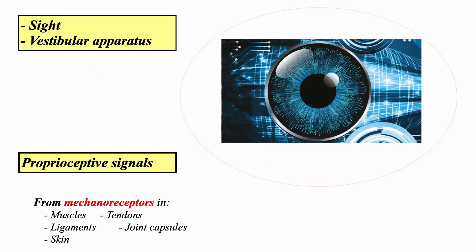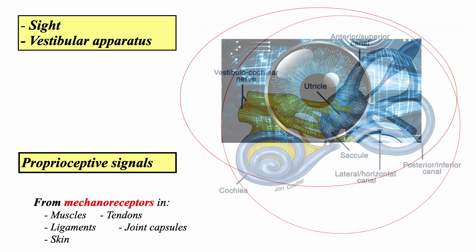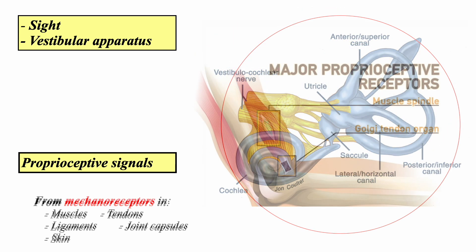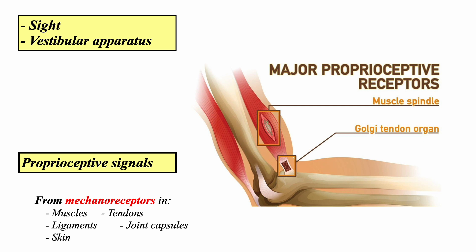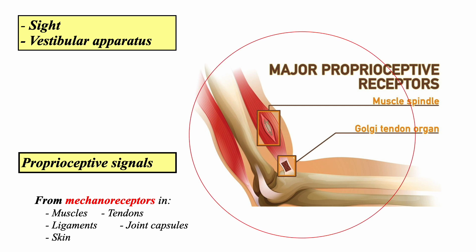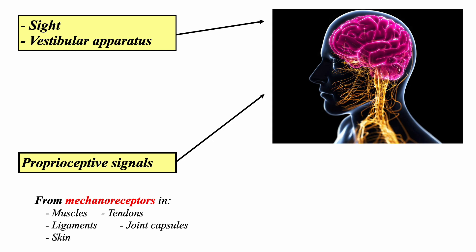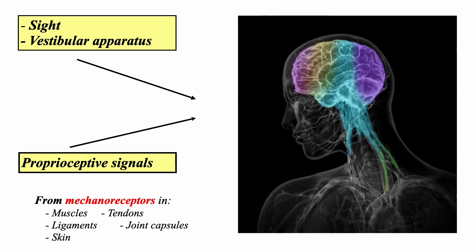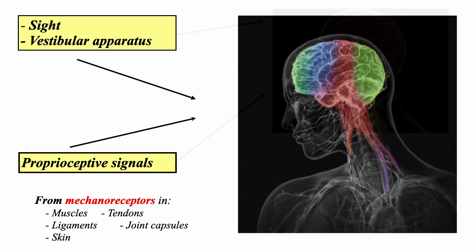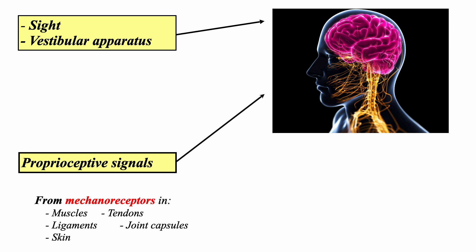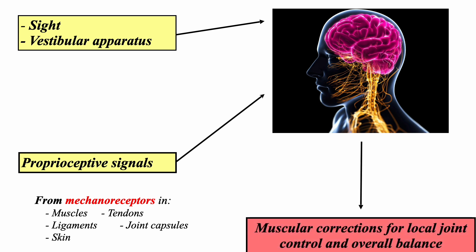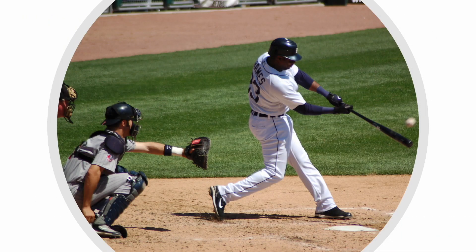The sensory signal arises from the visual neurons, vestibular apparatus, and proprioceptive signals from mechanoreceptors in muscle, ligament, tendon, and joint capsules. These sensory signals transfer to the central nervous system. The sensory signals integrate in the brain and make complex motor signals. The motor signals transfer to entire muscles for correct joint control and overall balance.